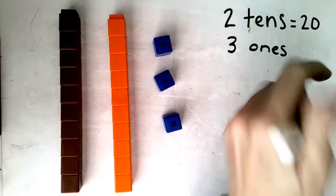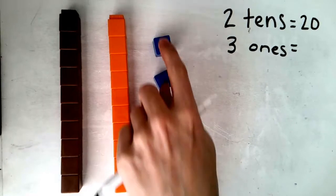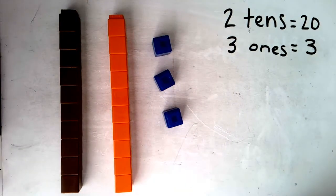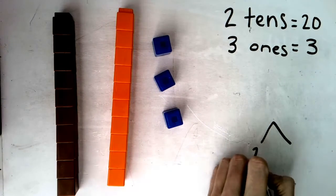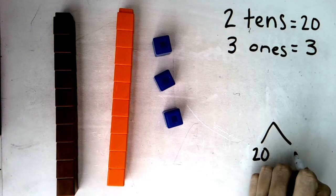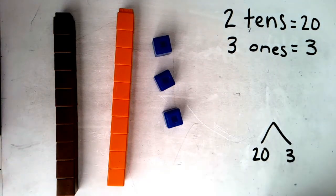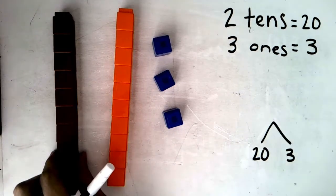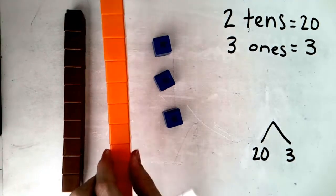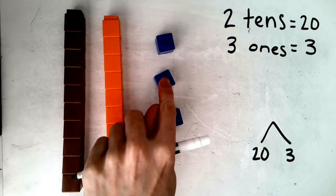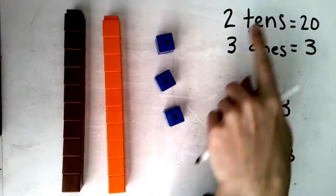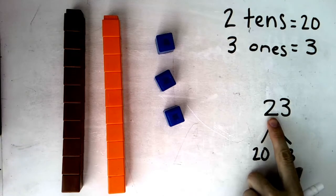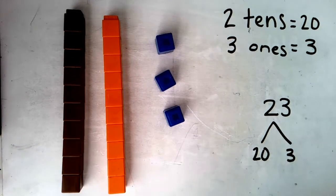Let's make a number bond to show this. We just talked about our tens — we had two tens, which is a value of twenty. And we had three ones. Let's count to figure out how many all together, starting with our tens: ten, twenty — now count by one: twenty-one, twenty-two, twenty-three. Our whole number is twenty-three. Notice we had two tens and three ones. Look at the number twenty-three: two tens and three ones. It shows right there in that number!